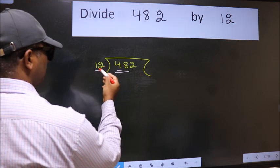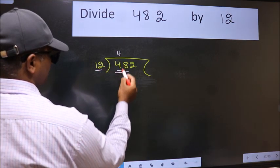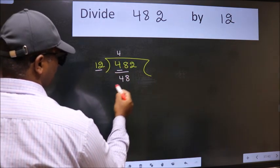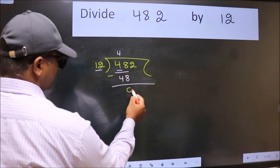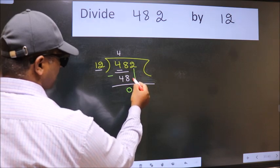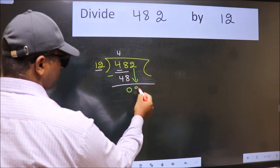When do we get 48 in 12 table? 12 times 4 is 48. Now we should subtract. We get 0. After this, bring down the beside number. So 2 down.